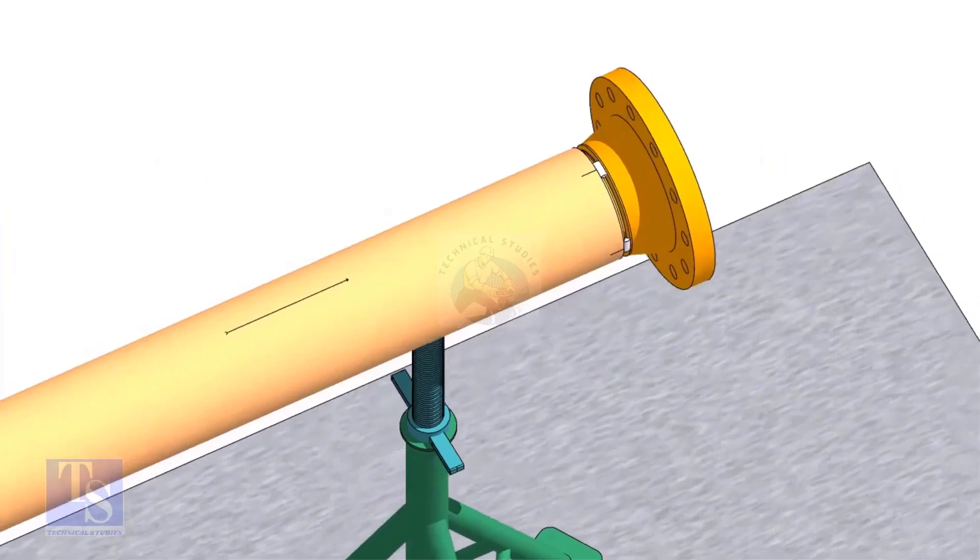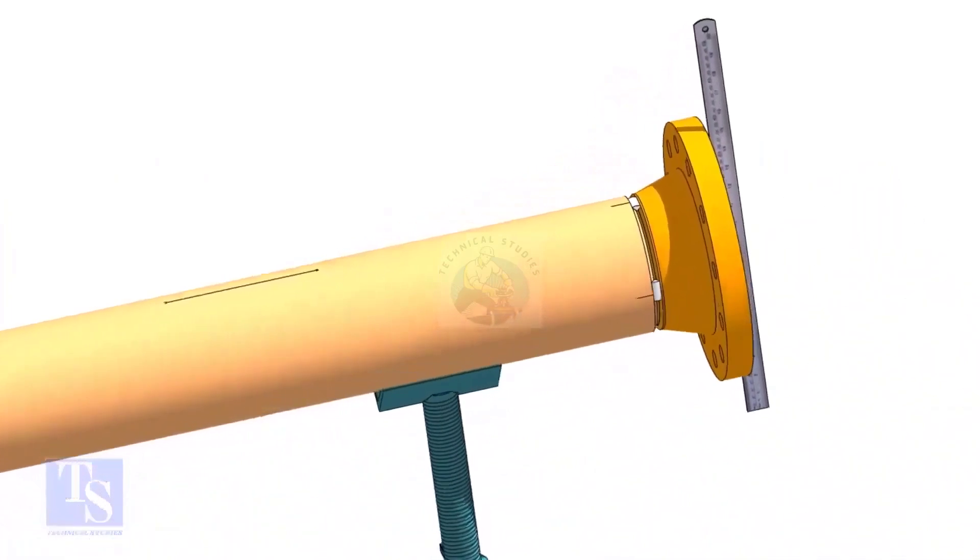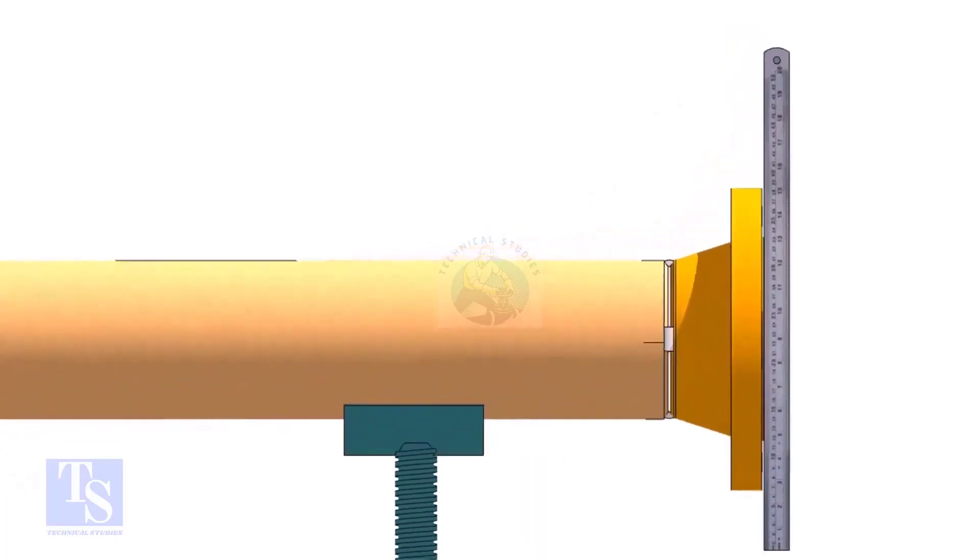Hold a steel ruler on the face of the flange vertically. Put a right angle on the pipe where the line is drawn. Move the right angle until the edge comes on 595mm on the tape.